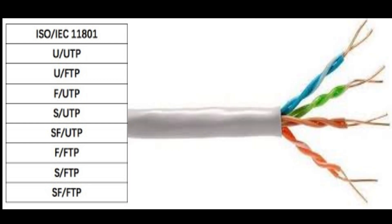UUTP — UUTP is an unshielded, unshielded twisted pair. It is not a shielded pair.